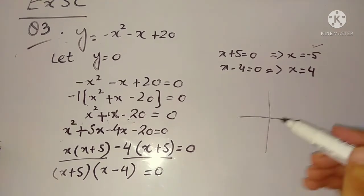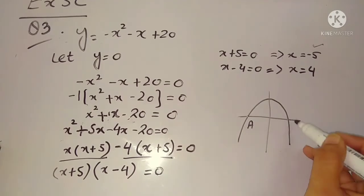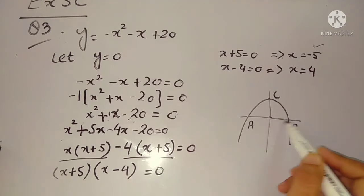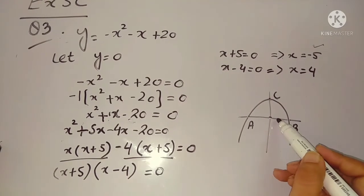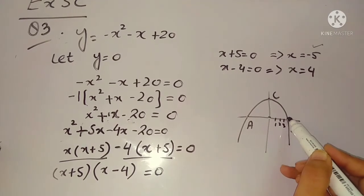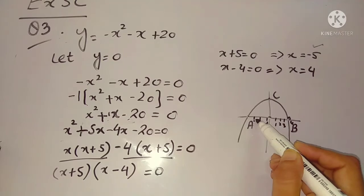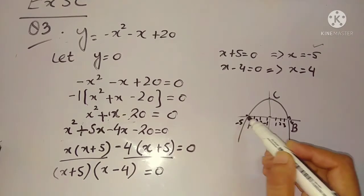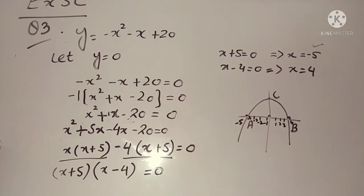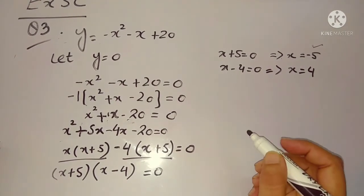Now take x common from the first two terms: x(x + 5). Then take -4 common from the last two terms: -4(x + 5). Now you can see that (x + 5) is common in both terms, so take (x + 5) common.